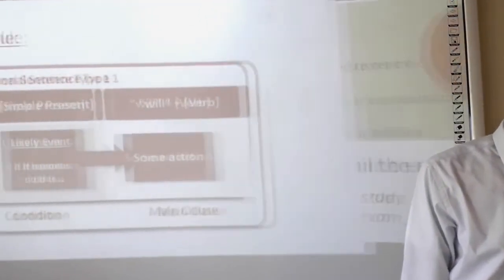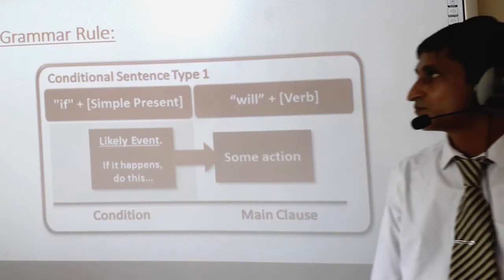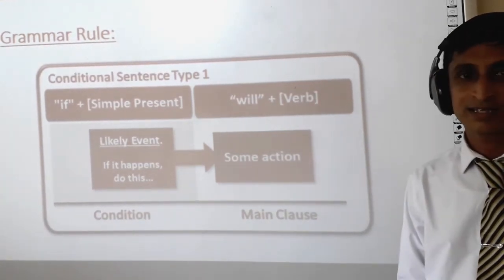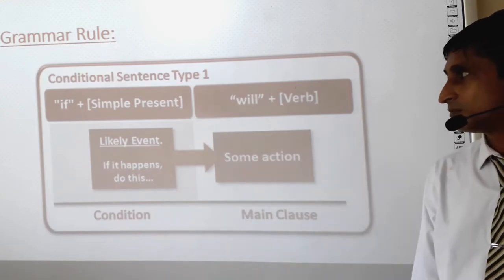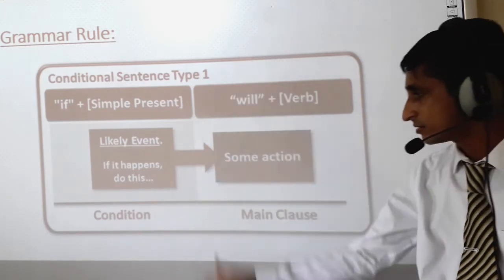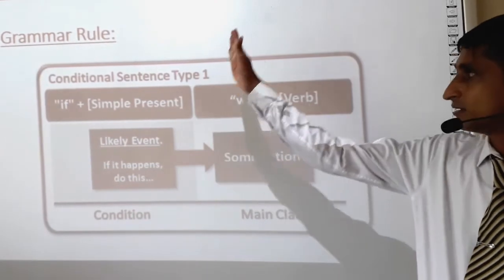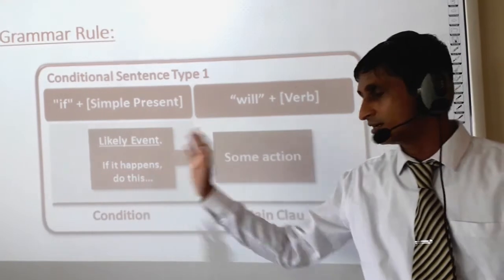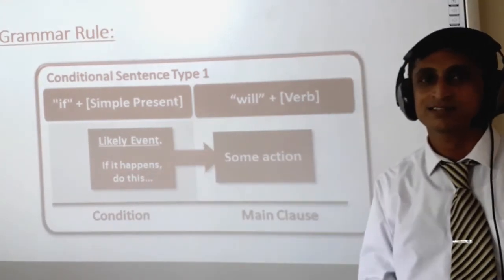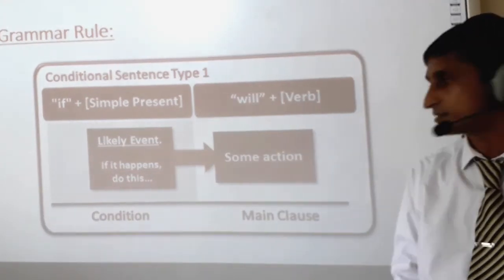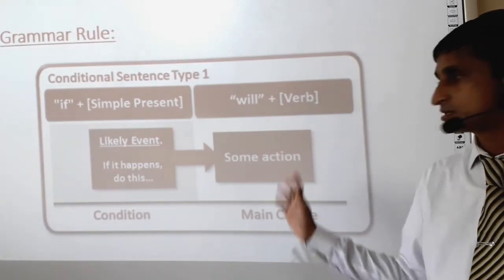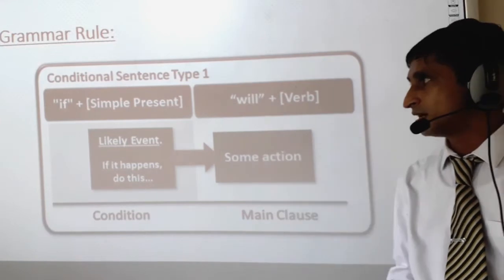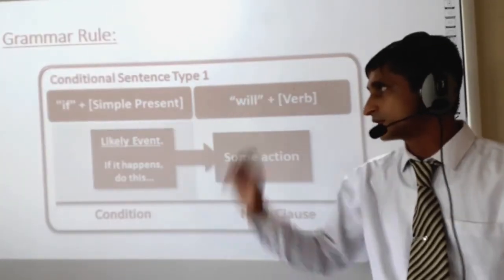Let's move to the rule. Now you have a certain idea about this conditional tense. Let's see it in a diagram. There are two parts — if I draw a line, there are two parts: the first one is the condition, and the second one is the main clause. The condition starts with if plus simple present.